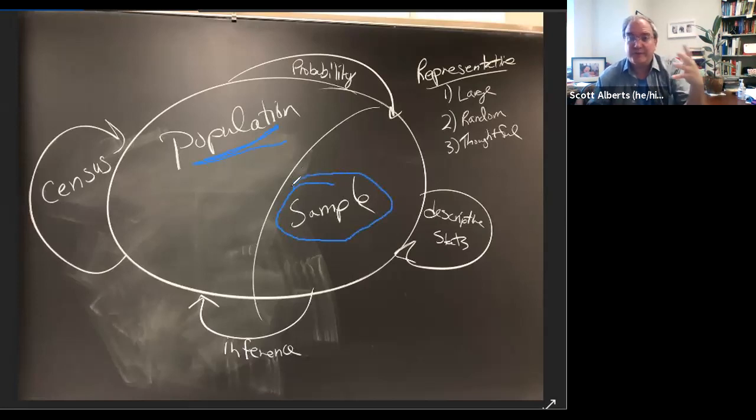And a sample is just the group that we can easily measure from. Because remember, the idea of a population is that it's either big or maybe even it's theoretical because we're not just thinking about the products that we've made today at the factory. We're thinking about the products that we're going to make in the future. So it's not even a real physical population. It's a prospective population.